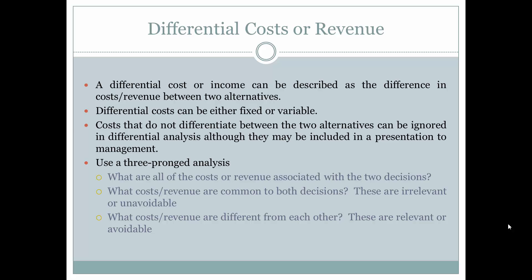Use a three-pronged analysis approach when determining what costs are differential or avoidable. First, what are the common costs or revenues associated with the two decisions? List all of those. Next, what costs or revenues are common to both decisions? These are irrelevant or unavoidable — if you make either decision, both will continue irrespective of the decision.